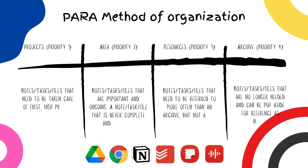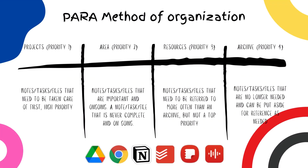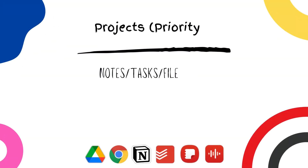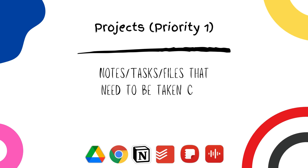PARA stands for Projects, Areas, Resources, and Archive. Each of those sections has a specific function. Projects is something that you're going to work on right away — something that has a deadline. So if you have to build a product and get it out by a specific date, that goes into Projects.